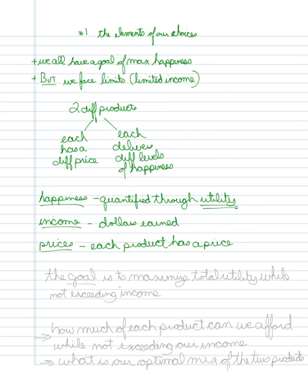Which then essentially means that we can restate the goal. The goal is to maximize total utility while not exceeding income.